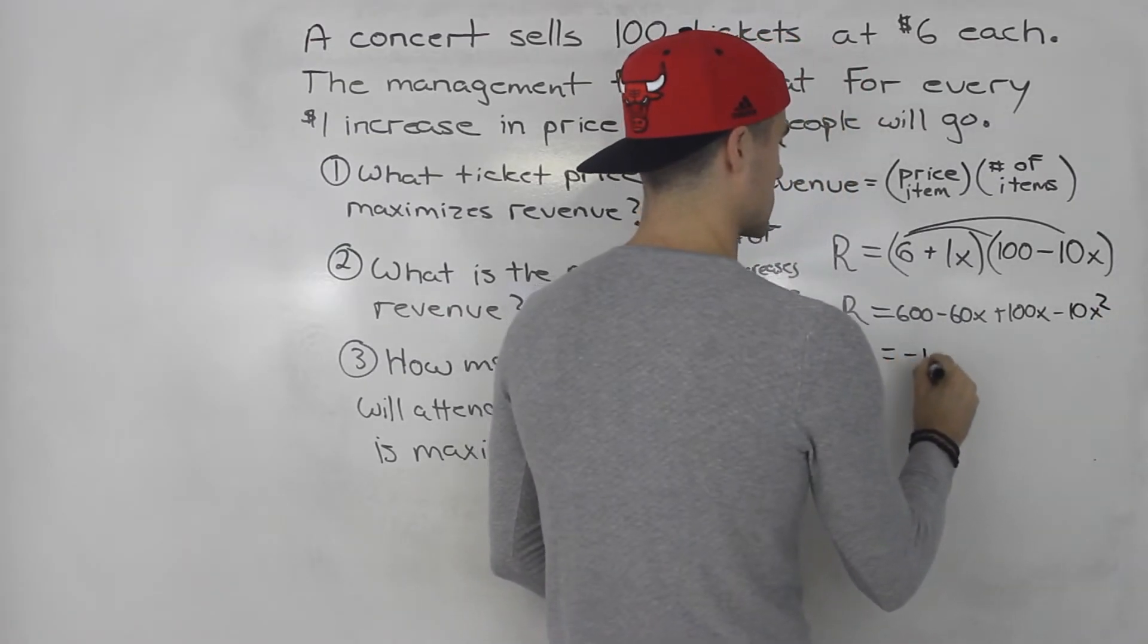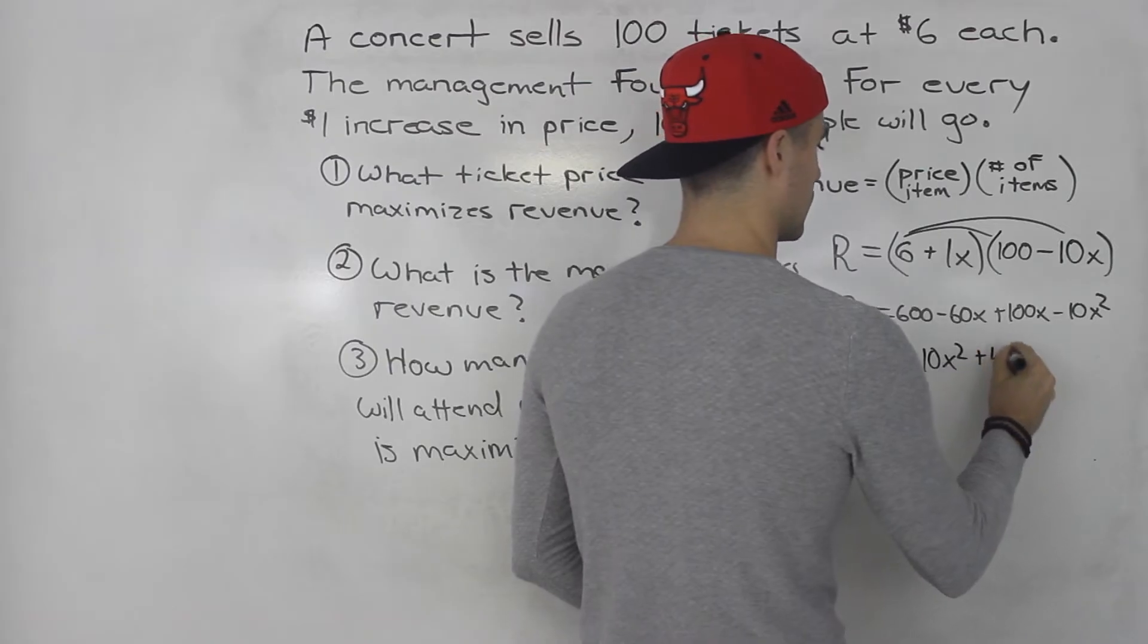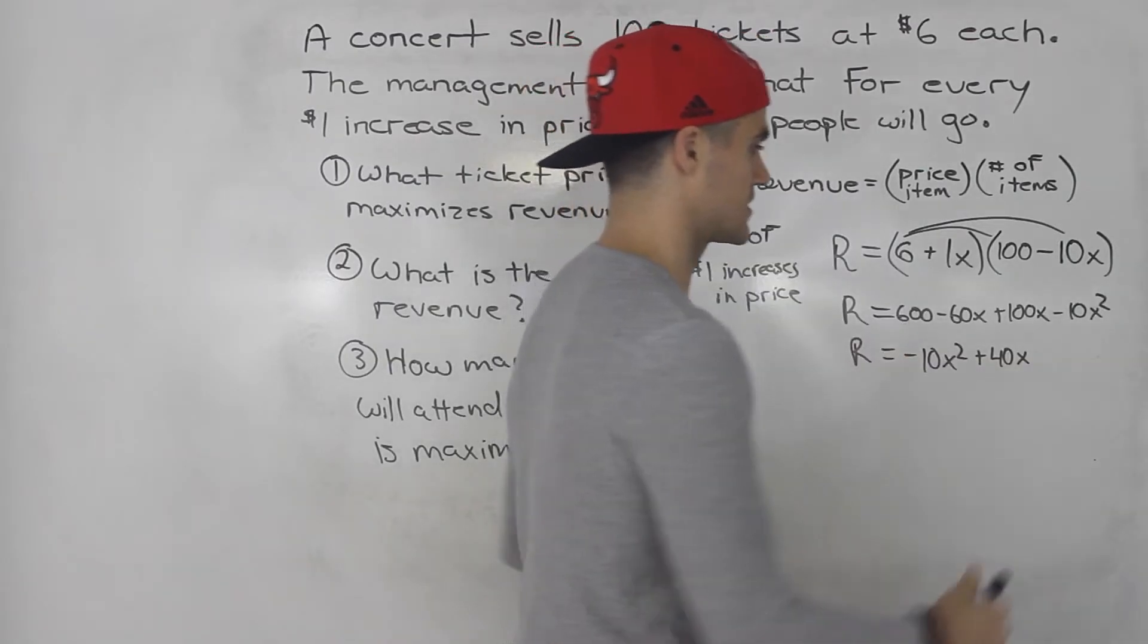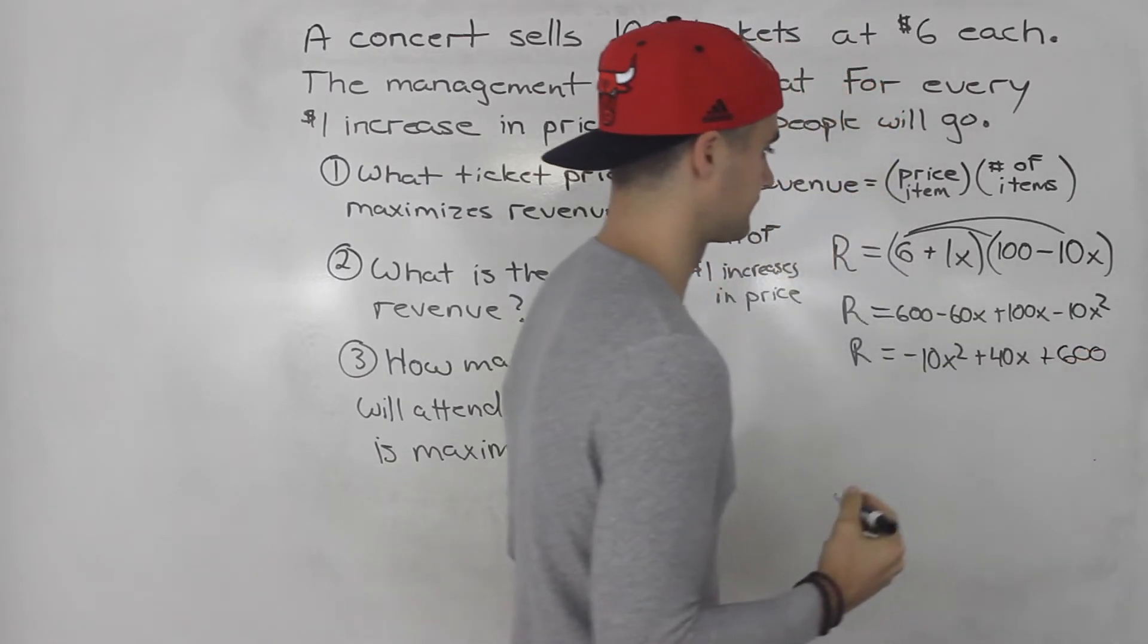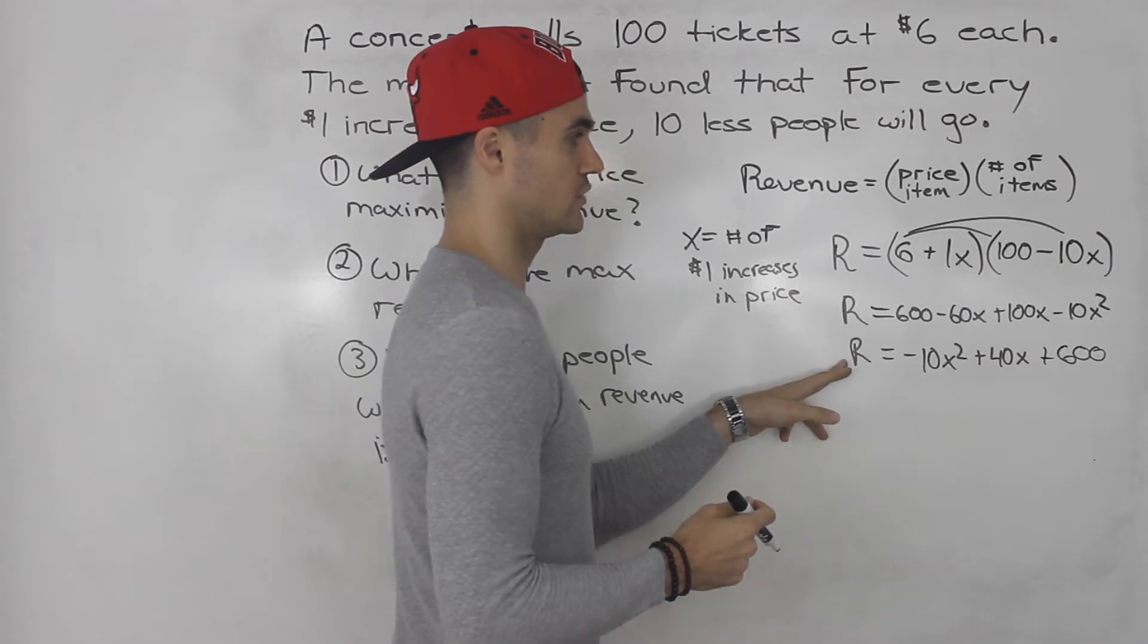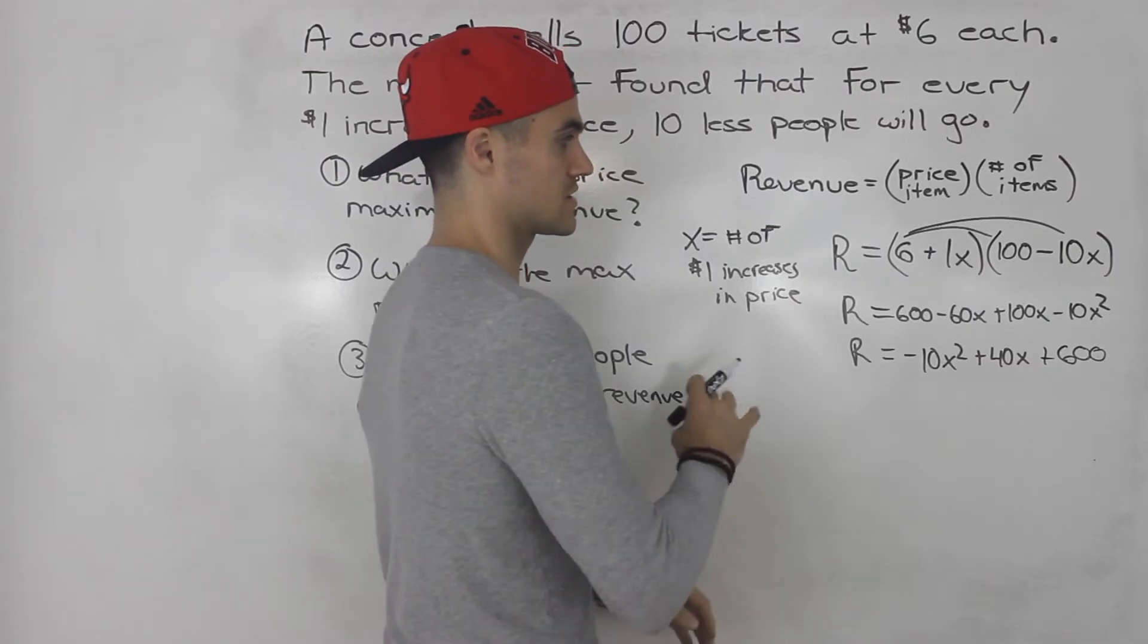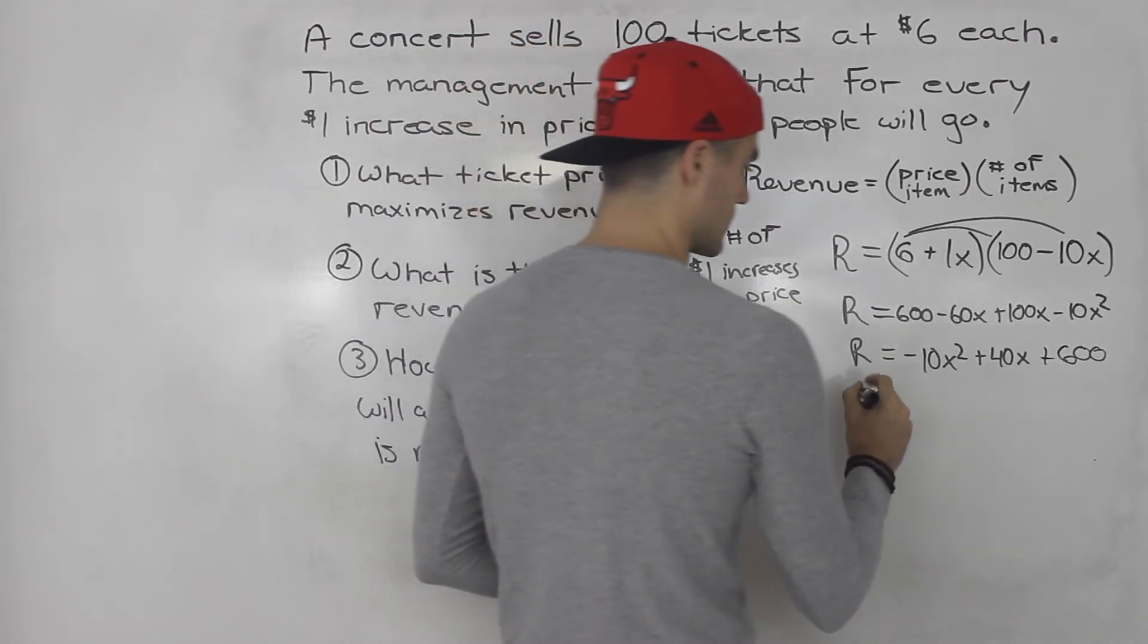Collecting all the like terms, this goes in front, this gives us positive 40x, and then plus 600. So now we have the standard form for the revenue function. We can just complete the square on it. So we took the factored form, expanded it to get the standard form.